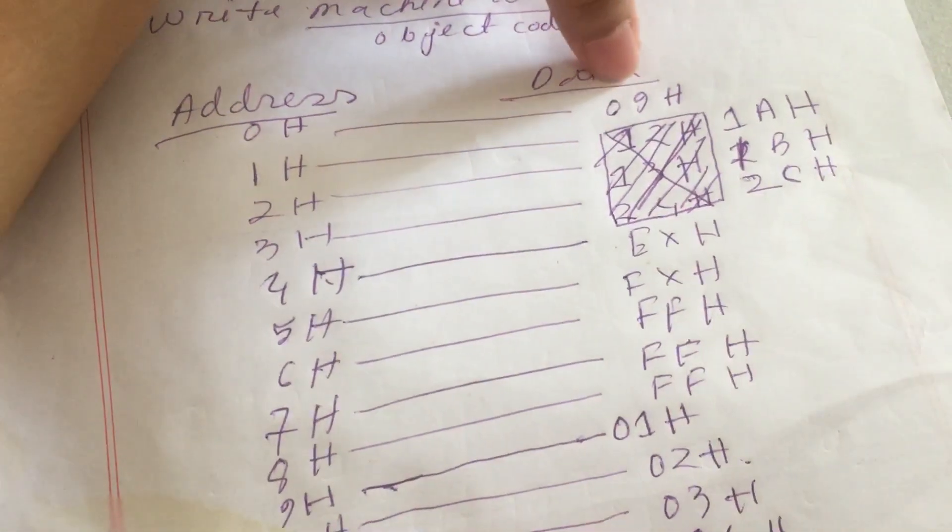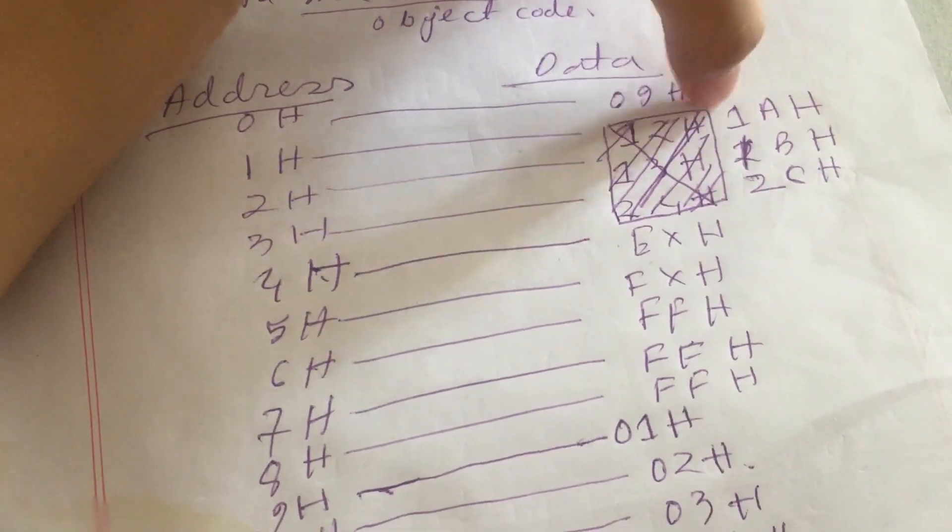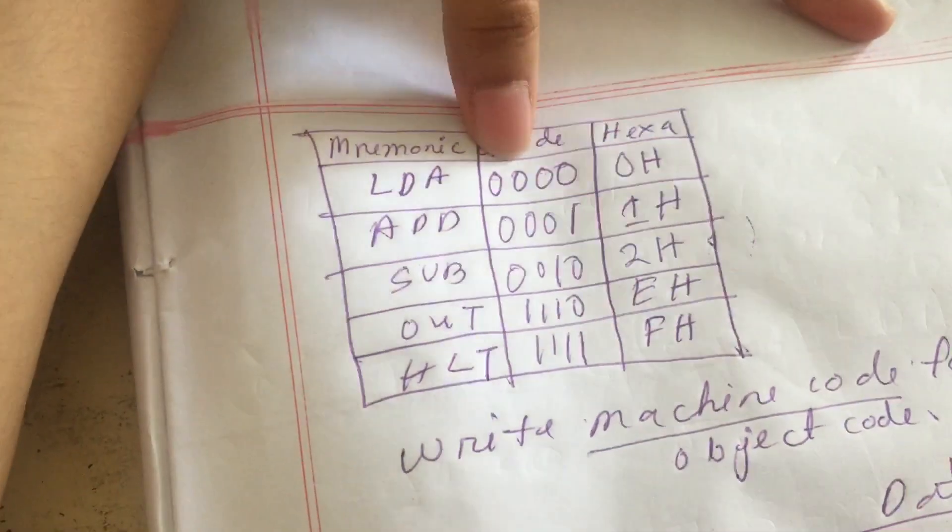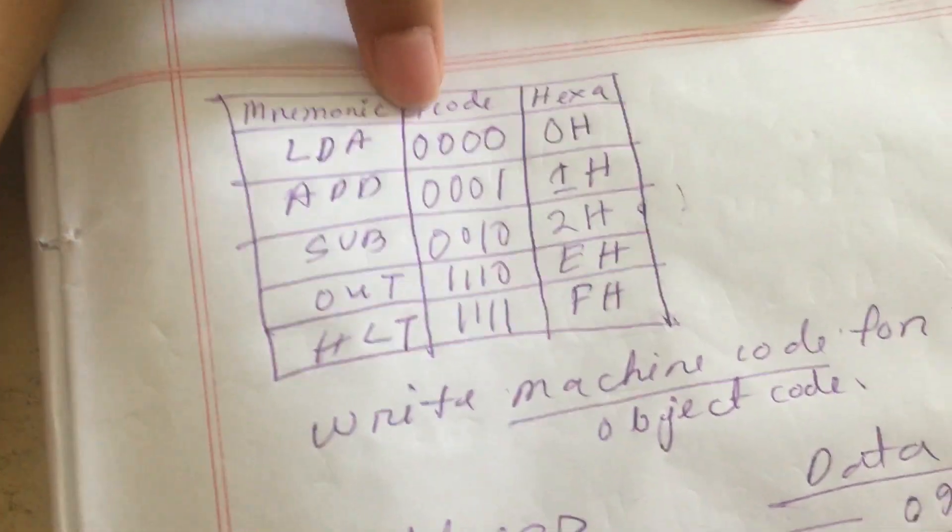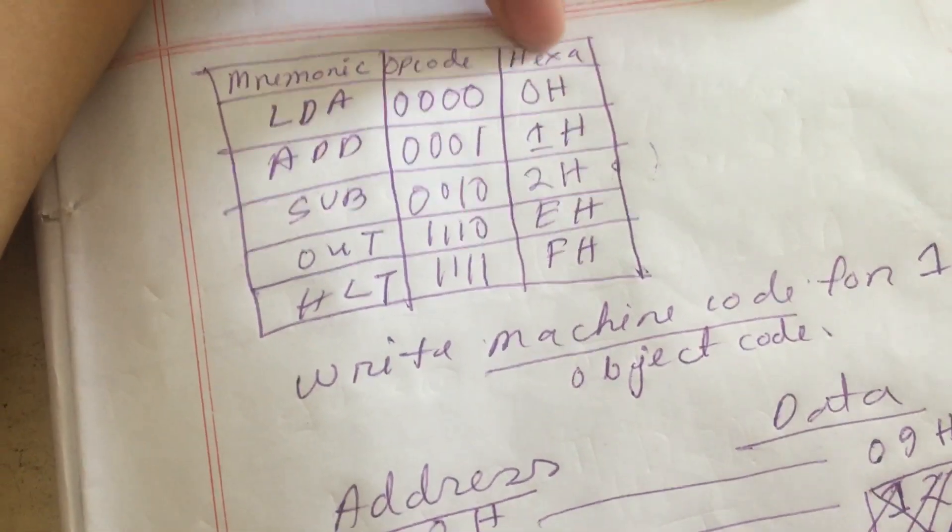Here we don't have to write the load, add, subtraction. This you can easily understand by seeing these numbers, what is happening here. Like in the table, there is an op code for every routine like LDA, ADD, and the hexer won't be given.